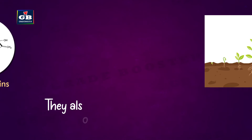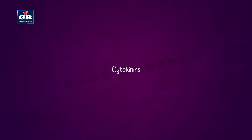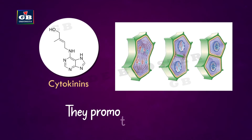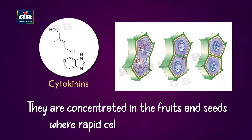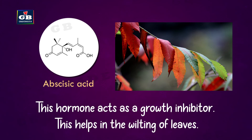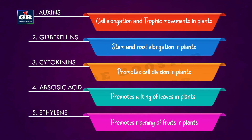Gibberellins also help in stem and root elongation in plants. Cytokinins — 'cyto' means cell, 'kinesis' means division — promote cell division. They are concentrated in the fruits and seeds where rapid cell division takes place. Abscisic acid acts as a growth inhibitor and helps in the wilting of leaves. Ethylene is a phytohormone that stimulates the ripening of fruits. So these are the five major phytohormones and their functions.